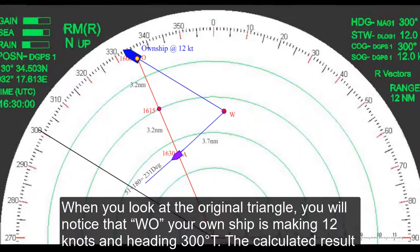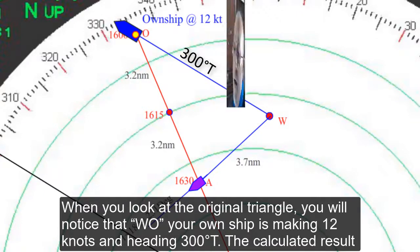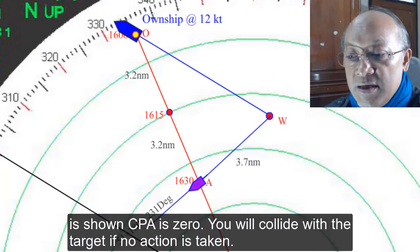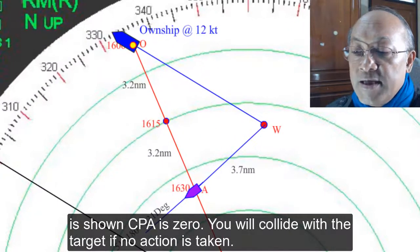When you look at the original triangle, you will notice that WO, your own ship, is making 12 knots and heading 300 degrees true. The calculator result is shown CPA is 0. You will collide with the target if no action is taken.